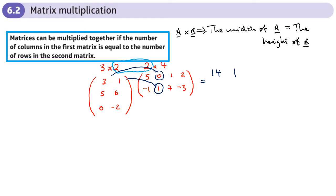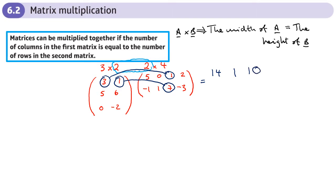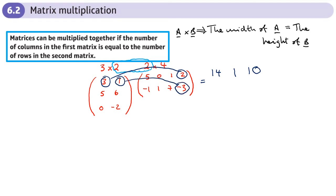First row, third column: 3 times 1 is 3 plus 1 times 7 is 7, so 10 goes here. Then the last column: 3 times 2 plus 1 times negative 3 gives 6 minus 3 = 3. That completes all the elements in the top row.